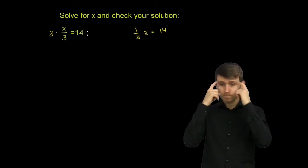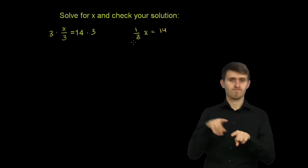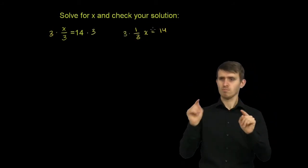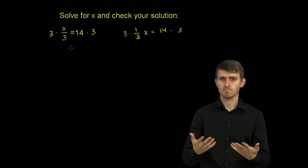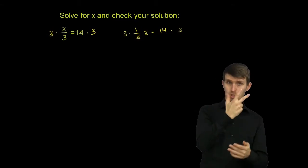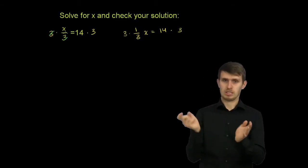But remember, if you do it to the left-hand side, you also have to do it to the right-hand side. And actually, I'll do both of these equations at the same time, because they're really the exact same equation. So what are we going to get over here on the left-hand side? 3 times anything divided by 3 is going to be that anything. We're just going to have an x left over on the left-hand side.